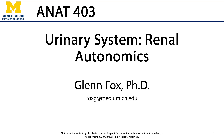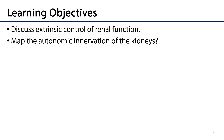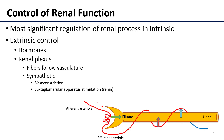Let's discuss renal autonomics. In this video we'll discuss the extrinsic control of renal function as well as the autonomic innervation of the kidneys. Control of renal function may either be intrinsic from within the kidneys, which is the most significant form of renal regulation, or it may be extrinsic through either hormonal control such as antidiuretic hormone (vasopressin), ANP, parathyroid hormone, etc., or it may be through neural control.